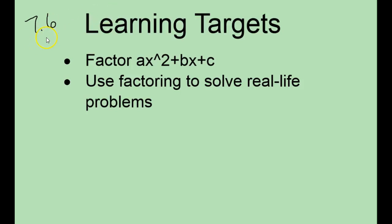Here we're going to be looking at section 7.6, and our learning targets are to factor ax squared plus bx plus c. You'll see this is a little different because there's a value in front of the x squared term. We've been working with trinomials where that value was always 1, so now it's a different number and we have to use some different strategies. Then we're going to be using factoring to solve real-life problems.